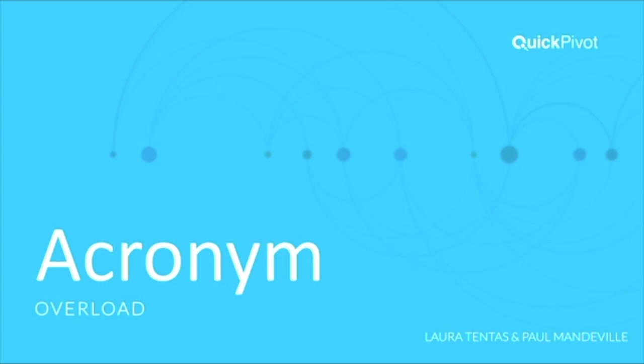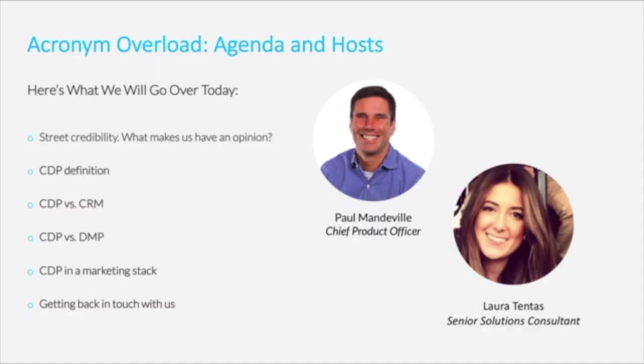Hey everybody, this is Quick Pivot and we're here to talk about acronym overload. You've probably heard them: CRM, DMP, CDP, MAP, BI, AI — they're everywhere as marketing stacks get more and more complicated. We want to unravel at least a couple of the big ones and compare CDPs to CRM systems and DMPs.